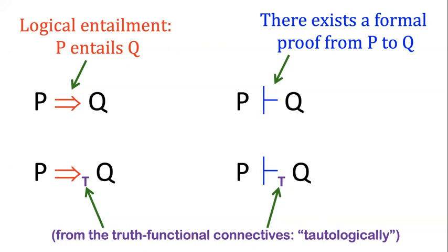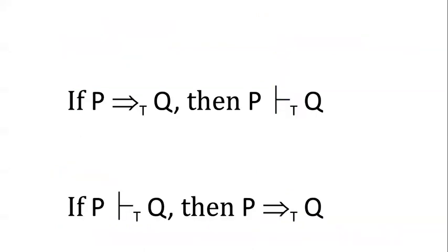So what these symbols allow us to do is formulate two different concepts, two different conditionals. We can say, what if p entails q? If p entails q, then there's a formal proof from p to q.